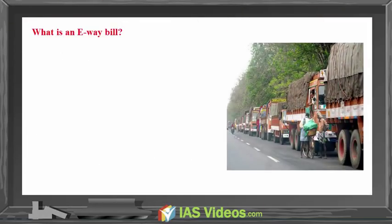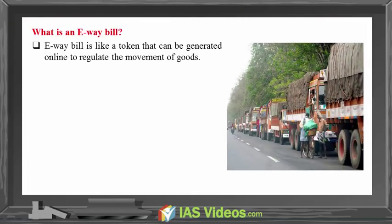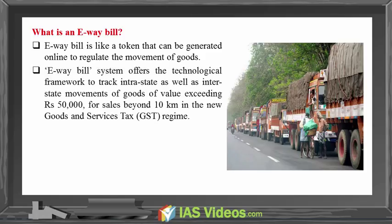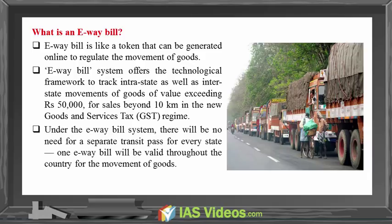What is an E-Way Bill? An E-Way Bill is like a token that can be generated online to regulate the movement of goods. The E-Way Bill system offers a technological framework to track intrastate as well as interstate movements of goods of value exceeding Rs. 50,000, for sales beyond 10 km in the new Goods and Services Tax regime. Under the E-Way Bill system, there will be no need for a separate transit pass for every state — one E-Way Bill will be valid throughout the country for the movement of goods.